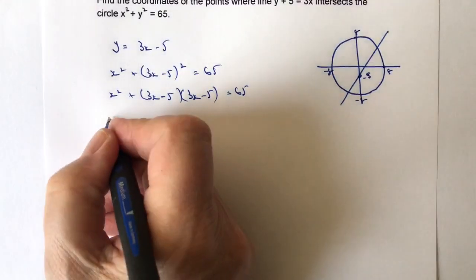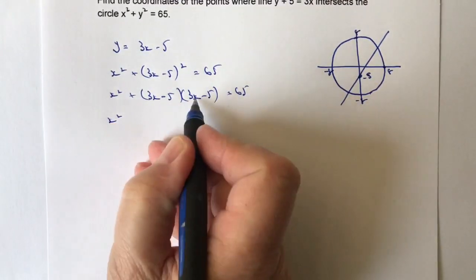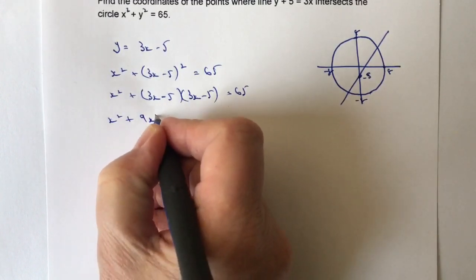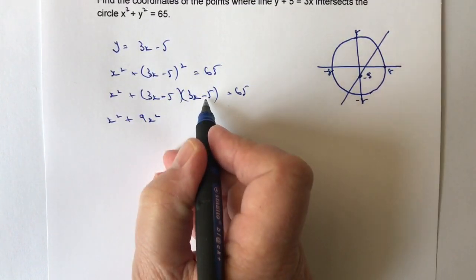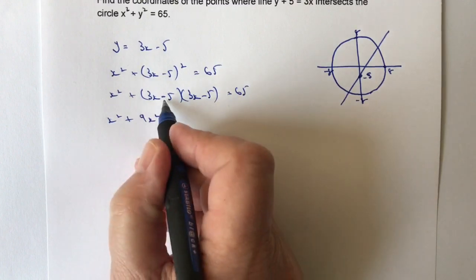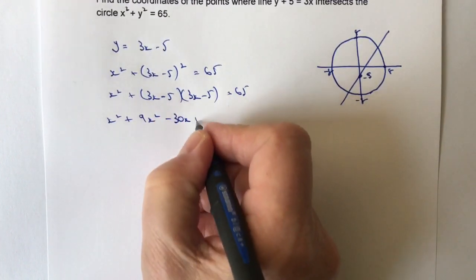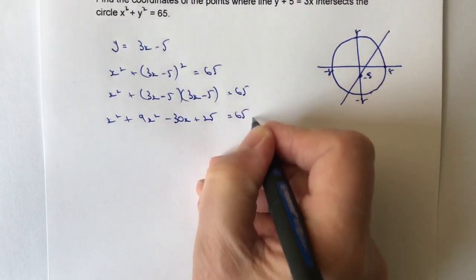So I've got x squared, and then I'm going to multiply this out. So 3x times 3x is 9x squared. 3x times minus 5 is minus 15x. Minus 5 times 3x is minus 15x, so that's minus 30x. And then I've got plus 25 equals 65.